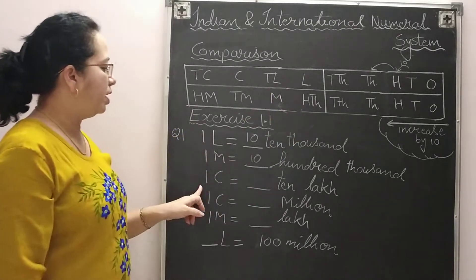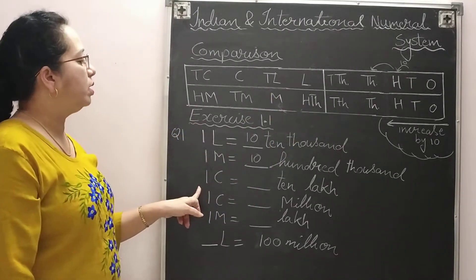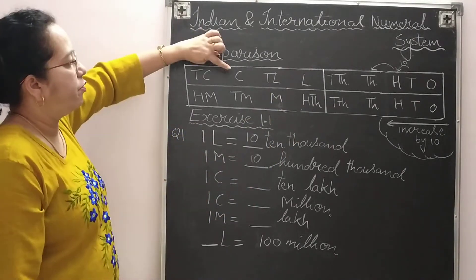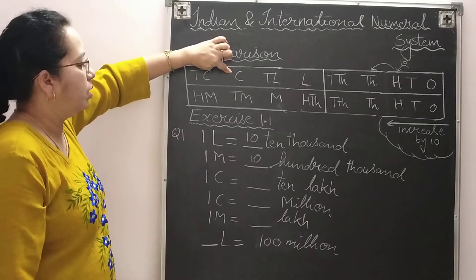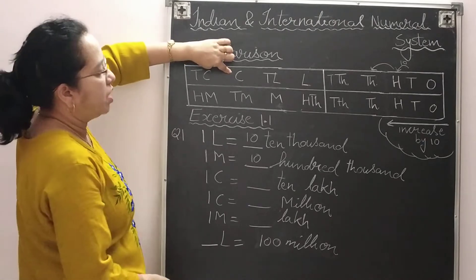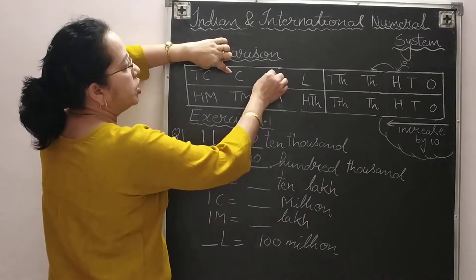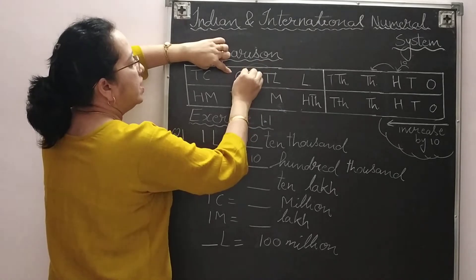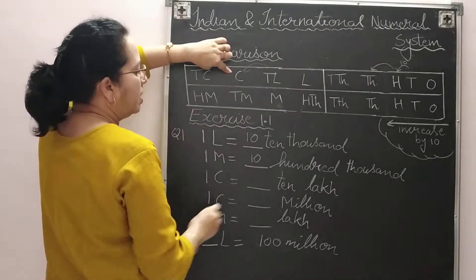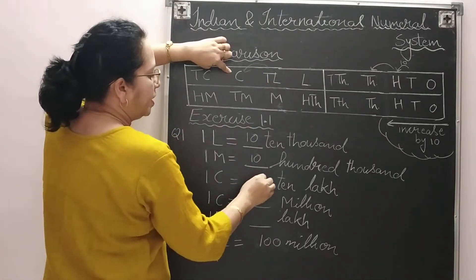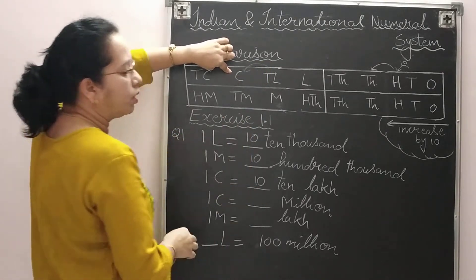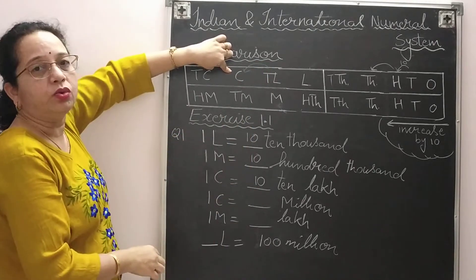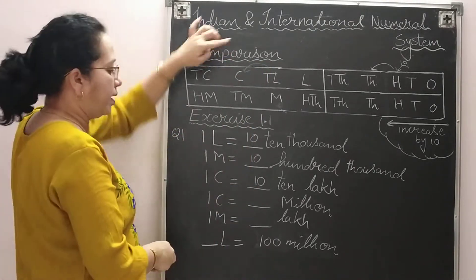Next question: one crore. Keep finger on one crore, then ten lakh — only one jump. So we write down: one crore is equal to ten ten-lakhs.